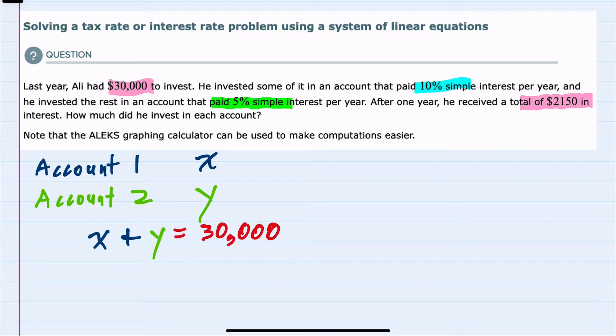And then I can also look at the interest. So the interest on account 1 was 10%. So that interest would be 0.10 times X. And the interest on the second account was 5%. So 0.05 times Y.